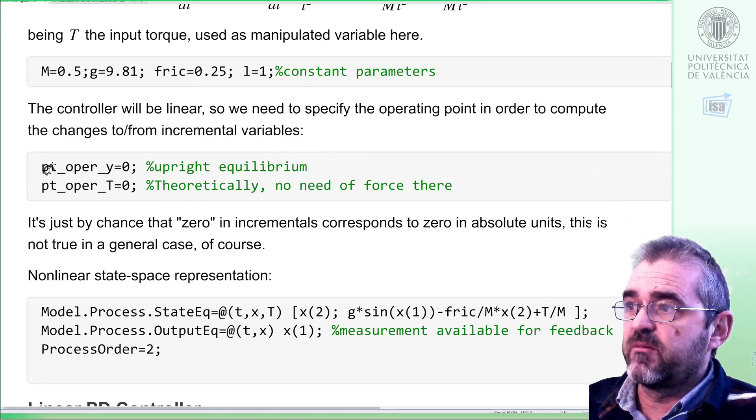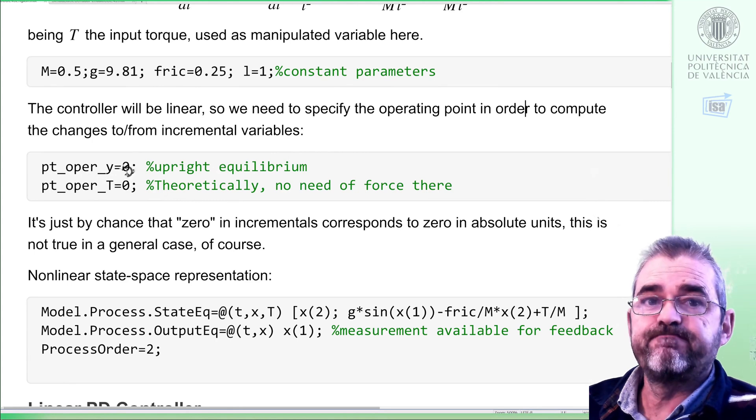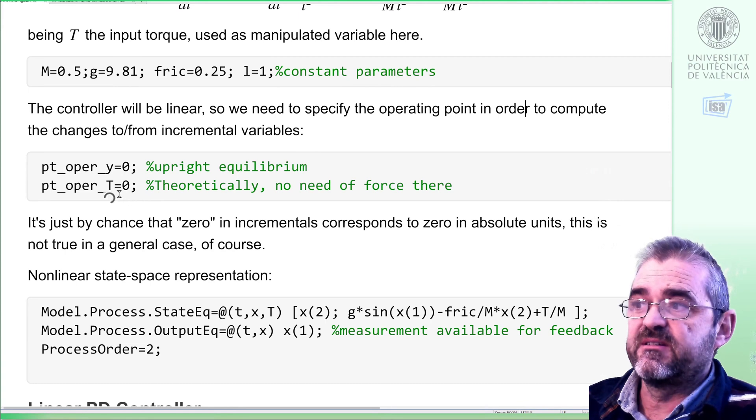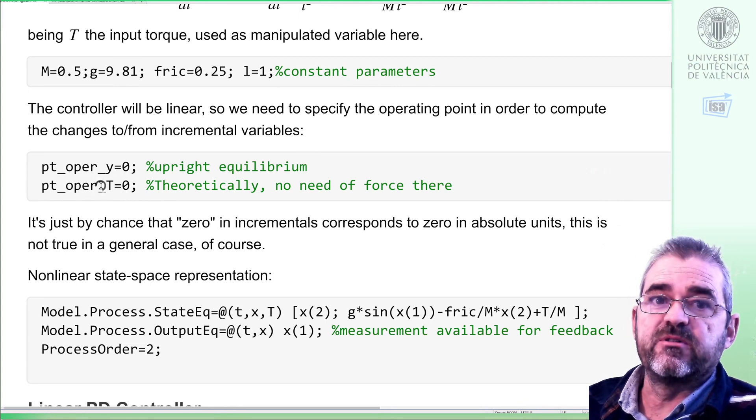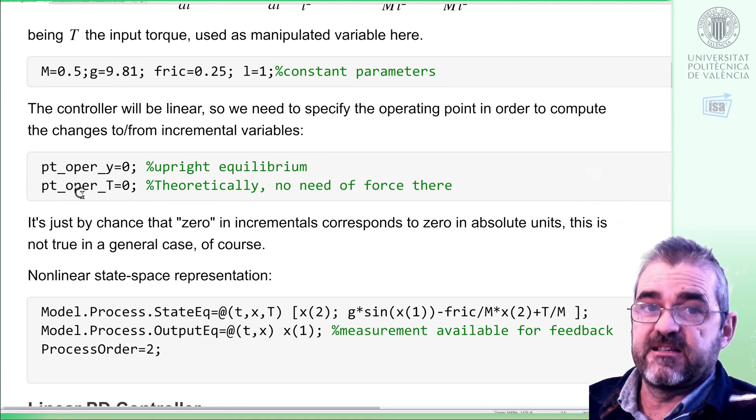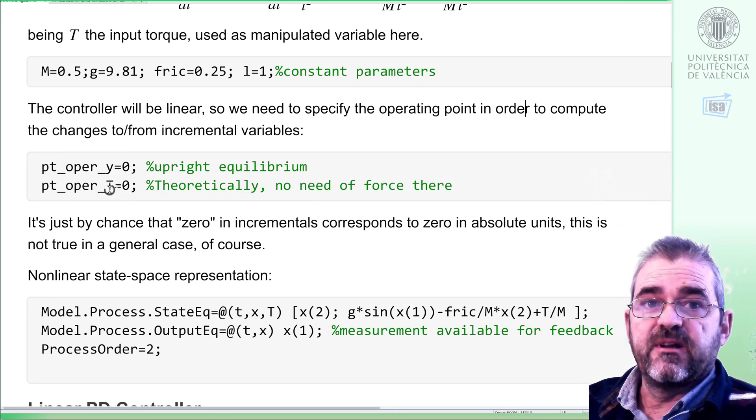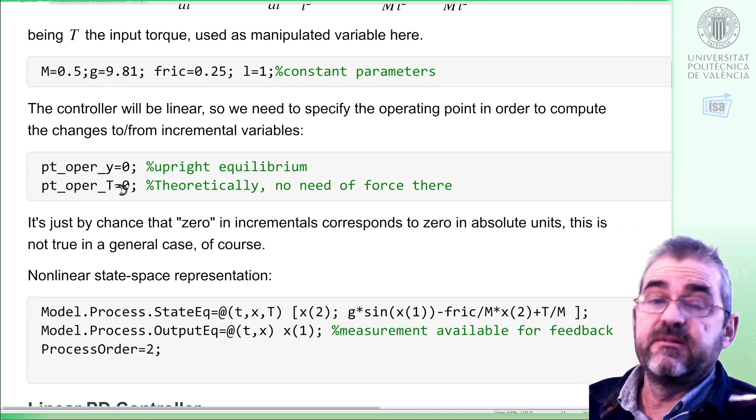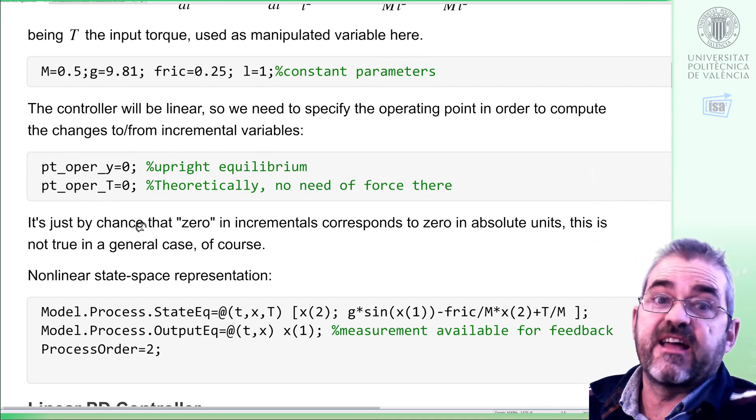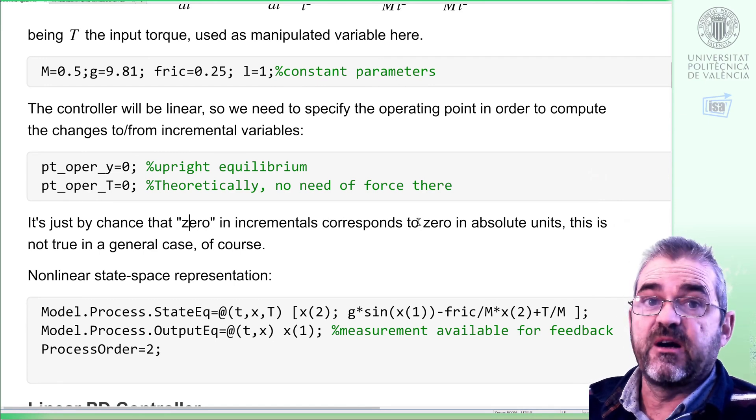the point in which we will operate, the angle, will be zero, and torque there is zero. So we could have skipped using these variables in MATLAB code. However, I leave them there intentionally because in a generic case these variables are indeed needed, so the code later on will be closer to what a controller for a linear process will need. But here is just by chance that zero in incremental coordinates corresponds to zero in our absolute units.